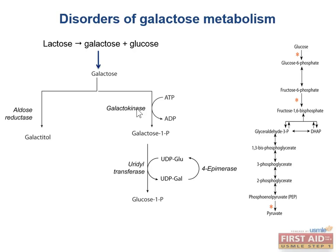Now let's move on to disorders of galactose metabolism. In galactose metabolism, galactose is converted into glucose so that it can be used in glycolysis from the beginning of the pathway. This mostly takes place in the liver, but other tissues also have galactose metabolism to a lesser extent.